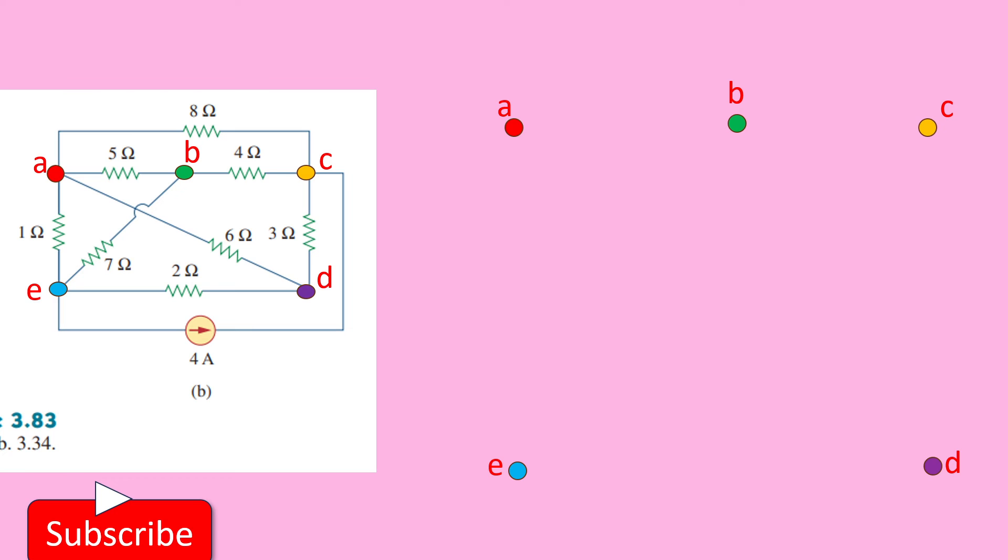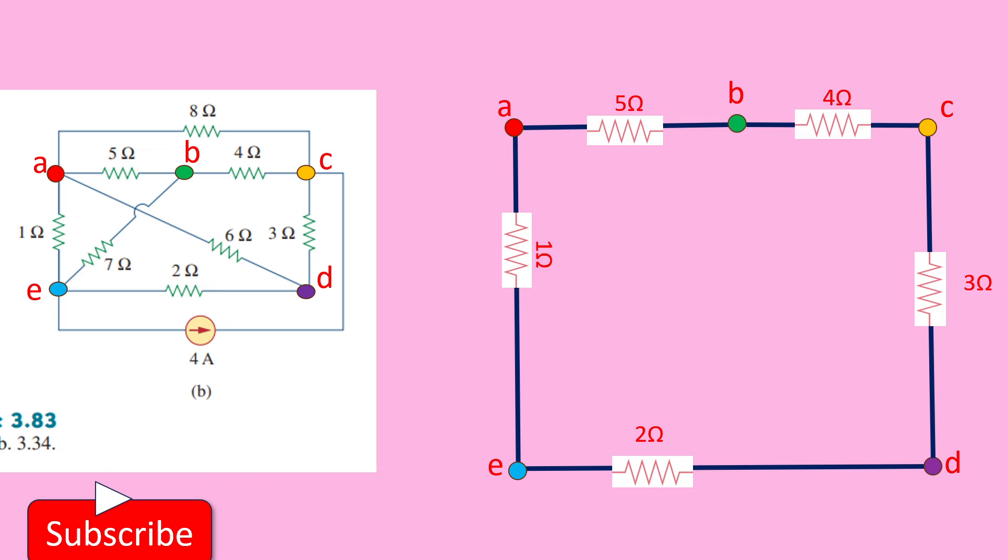We connect the branches between the nodes. Between A and B, we have this 5 ohm resistance. Between B and C, we have the 4 ohm resistance as given in the circuit. Between C and D, we have this 3 ohm resistance. Between D and E, we have this 2 ohm resistance. Between A and E, we have this 1 ohm resistance.